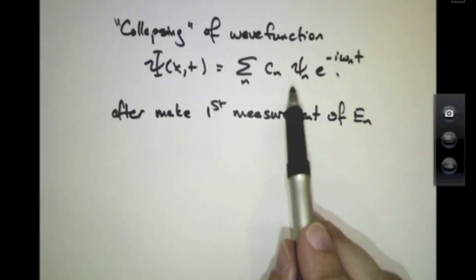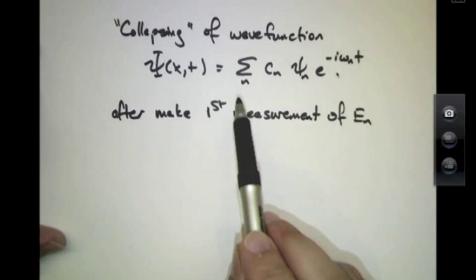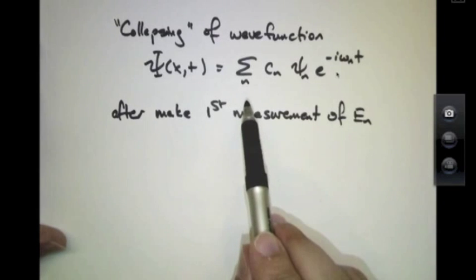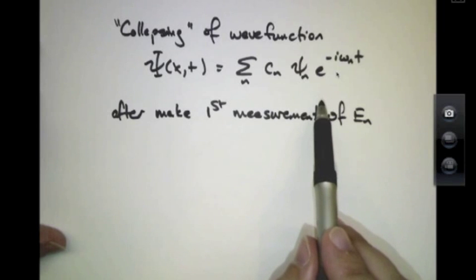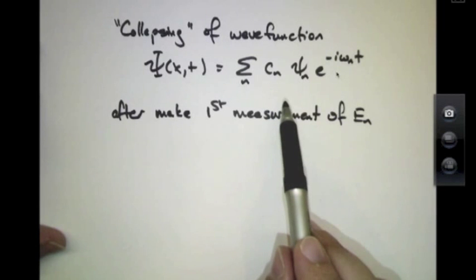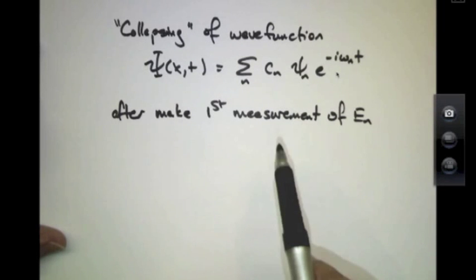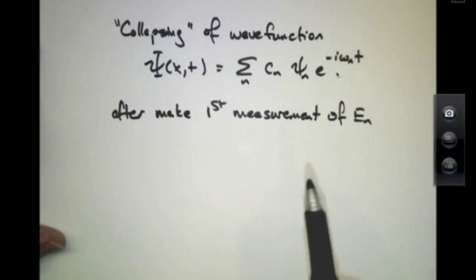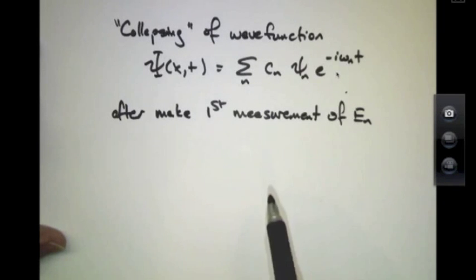So you can view this wave function in one of a couple different ways. Either in the first case, it's the cocktail of energies possessed by an ensemble of particles, or it's the cocktail of possibilities that any one particle can occupy before you go and choose to measure it. But after you've chosen to measure it, it's well determined. It's in that particular n eigenstate.